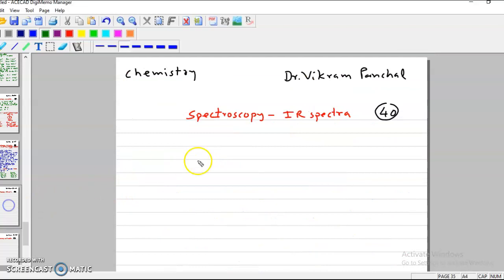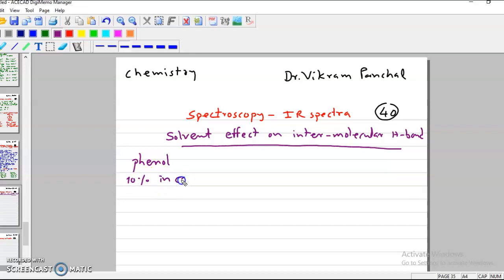Now we will see solvent effect on intermolecular hydrogen bonding. Suppose we take phenol. Phenol has intermolecular hydrogen bond. In 10% phenol in carbon tetrachloride, OH frequency will be from 3500 to 3450 cm inverse. It will be a broad band and that is due to hydrogen bonding.